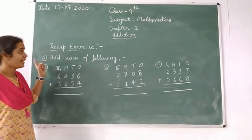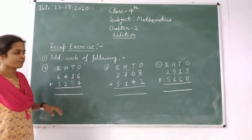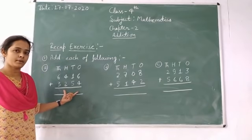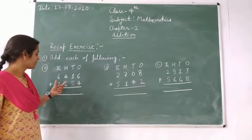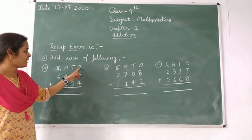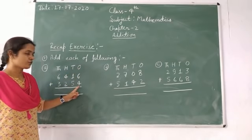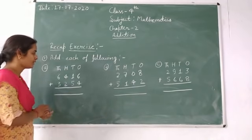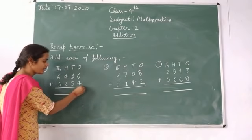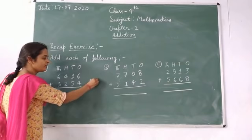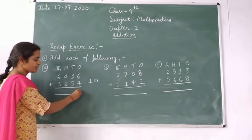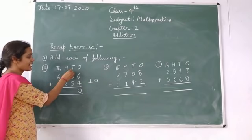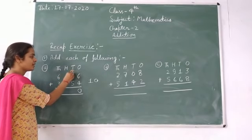Question number one: add each of the following. Here, four-digit numbers and you have to add. Start from the ones place. Six plus four — four numbers forward from six — we get ten. For ten, write zero at the ones place, and carry one to the tens place.